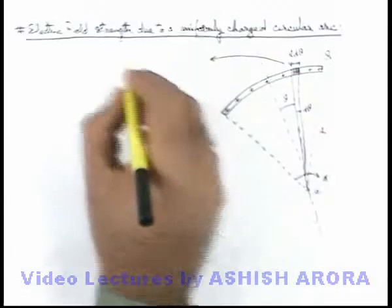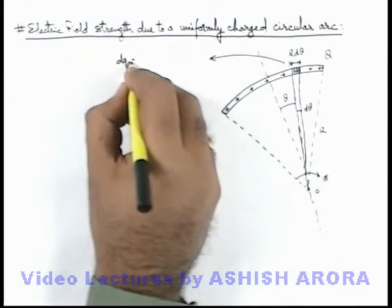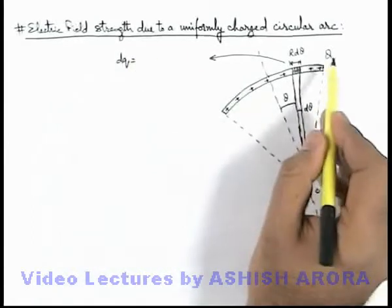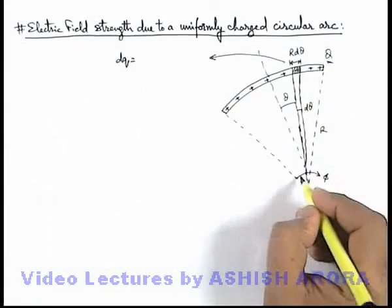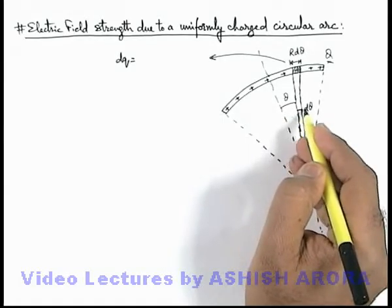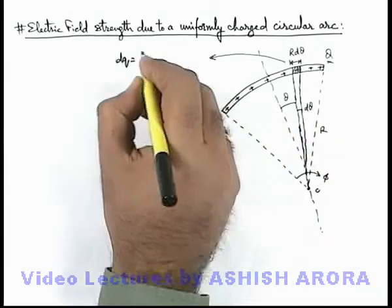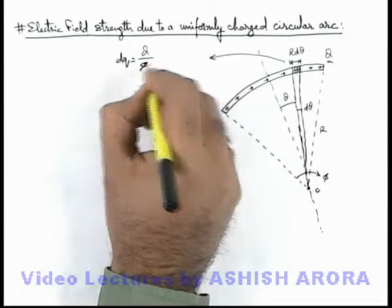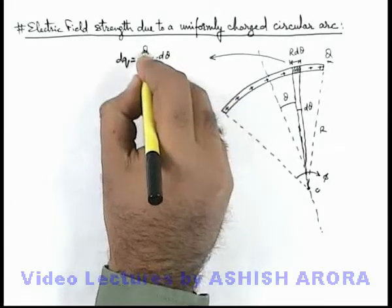On this element the charge dq can be easily given as total charge on angle phi is uniformly distributed, so for the small elemental angle d theta it'll be q by phi into d theta. This is the charge on this element.